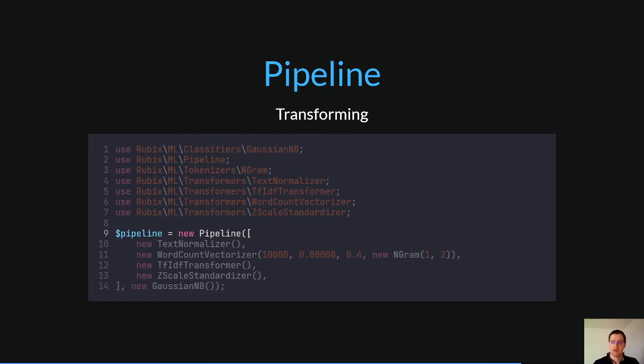Since we are dealing with strings in this example, we need to convert them into a numeric representation. The pipeline is a meta-estimator that can transform an input dataset by applying a series of transformers. It is like a middleware. This is the list of transformers that will be applied to our given dataset.